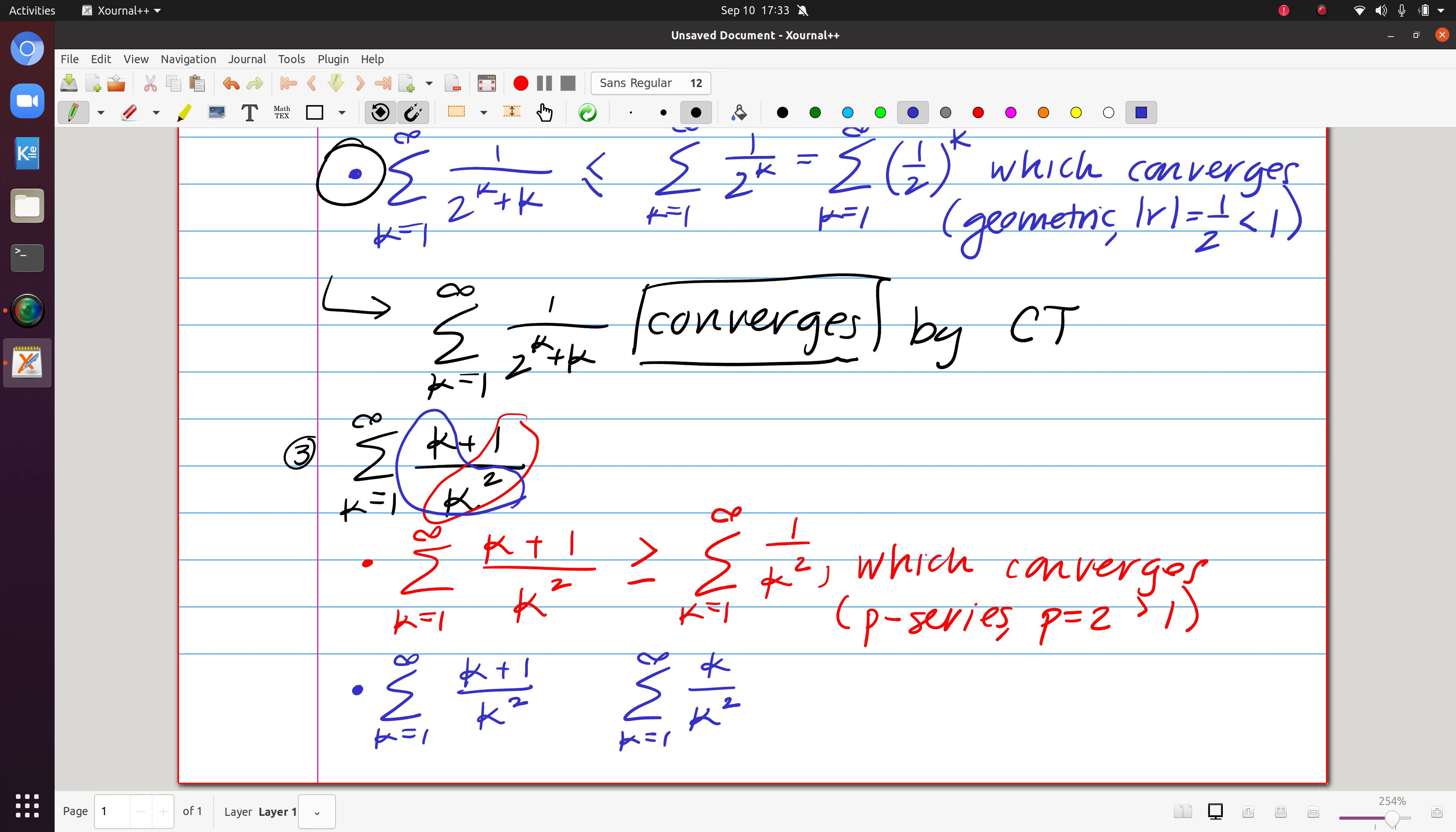Again, I'm comparing the numerators. So our numerator k plus one is, of course, larger than that of k. So the inequality goes in the same direction.